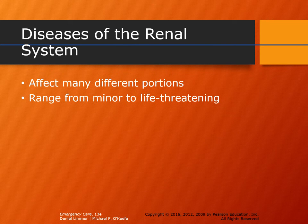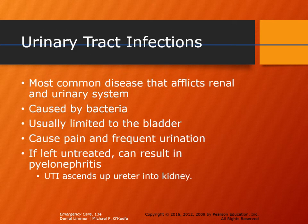Diseases of the renal system primarily affect the kidneys, though other areas can be affected. These can range from minor to very serious. One of the most common renal system issues is UTIs — urinary tract infections. We see these a lot in the field, typically in patients that are using some type of catheterization because they cannot urinate normally.